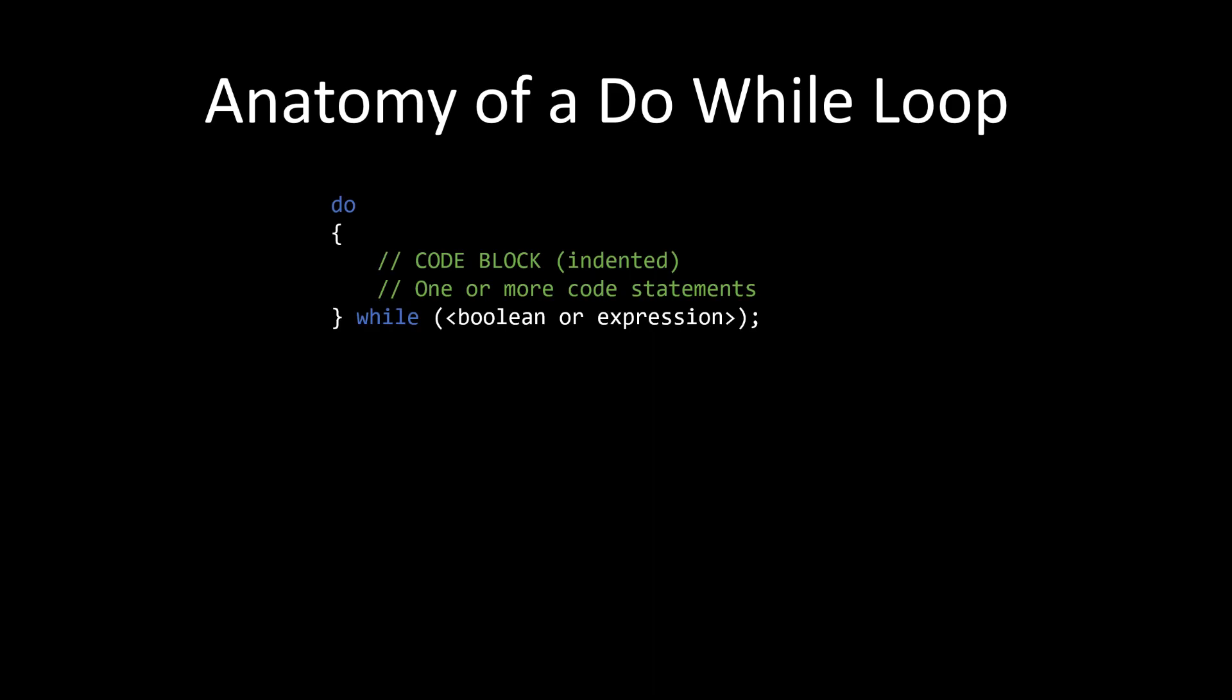So in the while loop, the condition comes first. But in the do while loop, the condition comes after the code block. And what this means is that the code block is going to run first, and it will always run at least one time. And then it's going to check the condition.